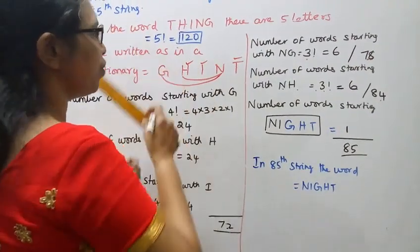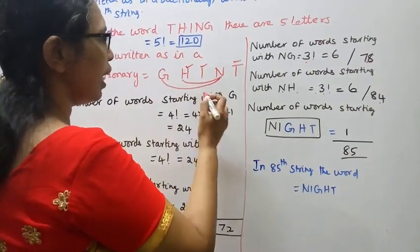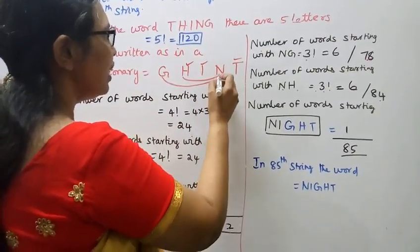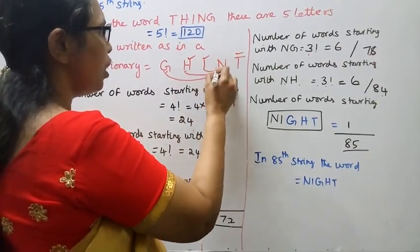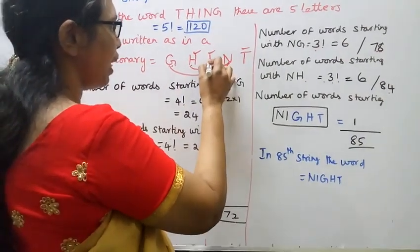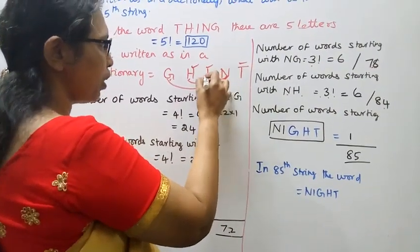84 and the next one, the only one. 84 completed, so the next one we're looking for is the remaining letters in alphabetical order after NG and NH.